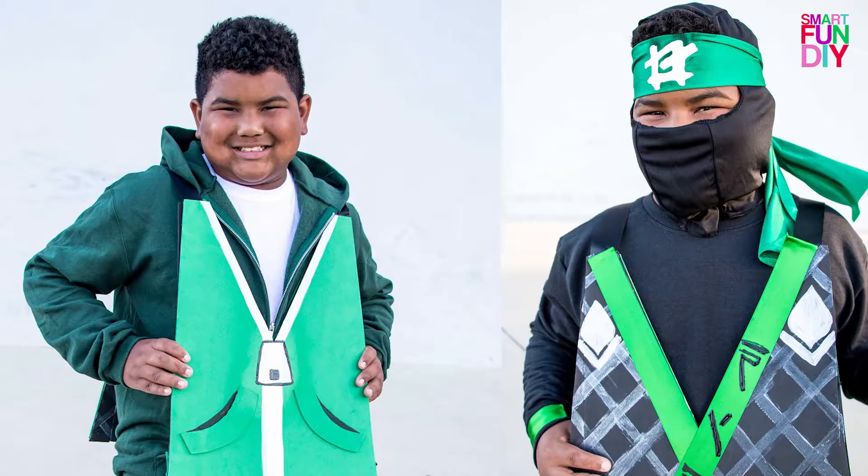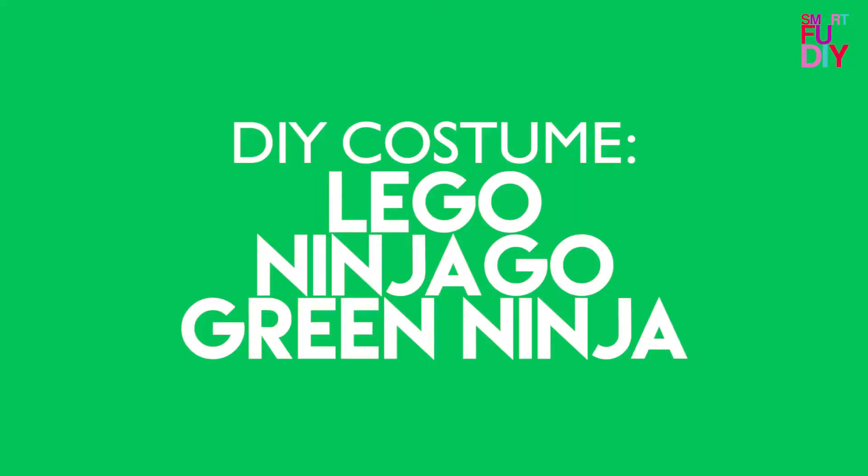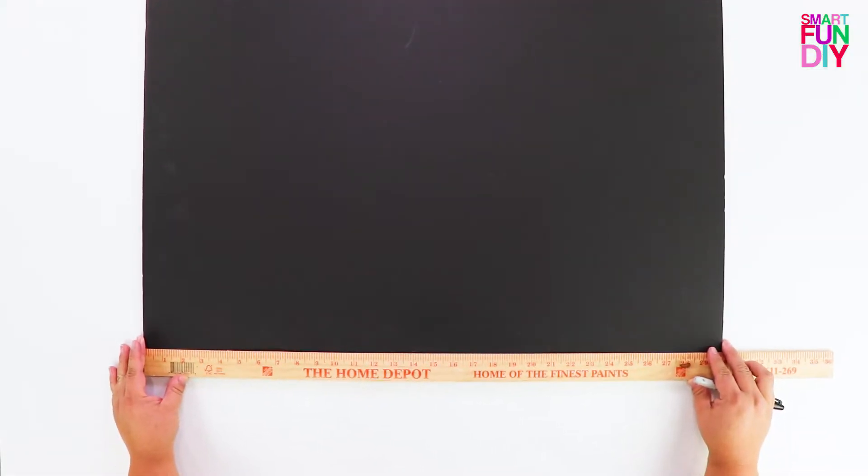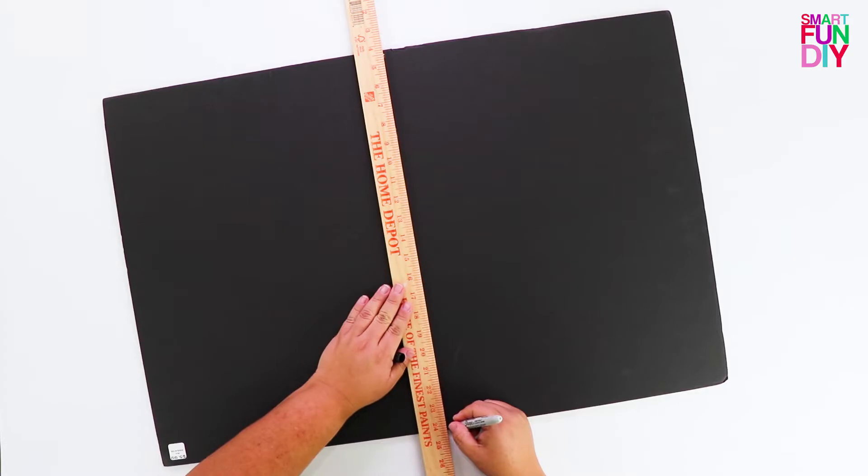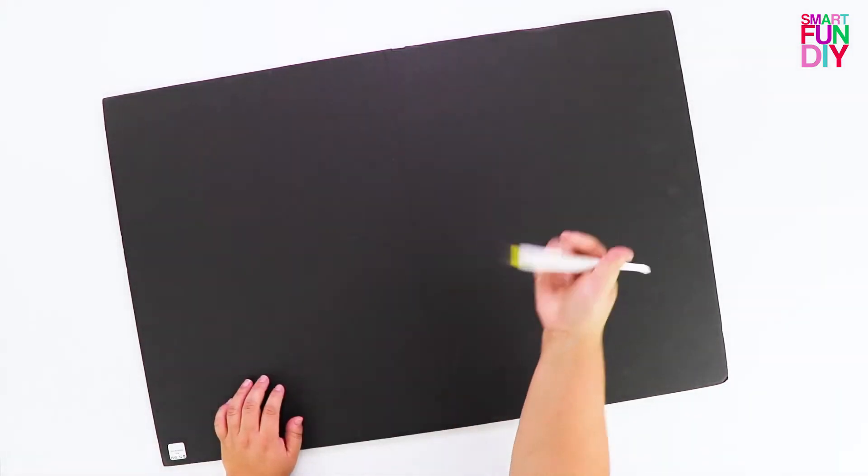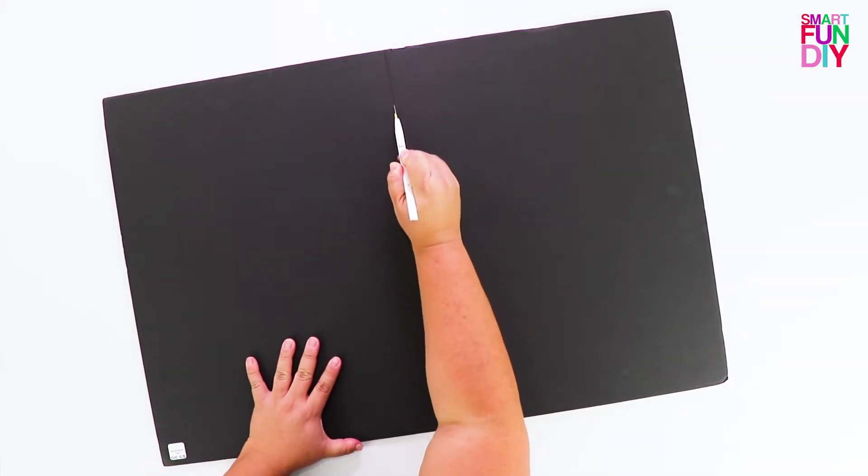This project is inspired by the Lego Ninjago movie, which is going to be in theaters September 22nd. Let's get started. You need a 20 by 30 piece of foam core board. You're going to cut that in half with a craft knife.